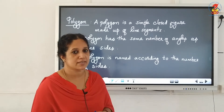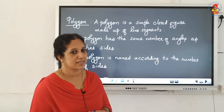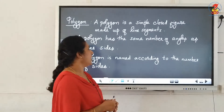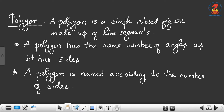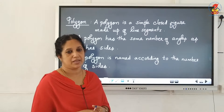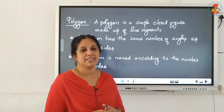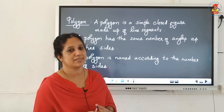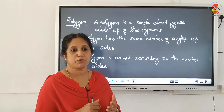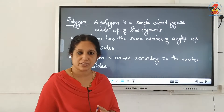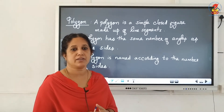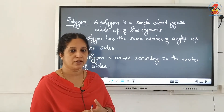What about a circle? A circle is not a polygon. A polygon has the same number of angles as it has sides. So if the polygon has 3 sides, it will have 3 angles. If the polygon has 4 sides, it will have 4 angles.